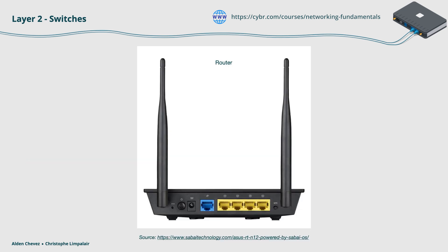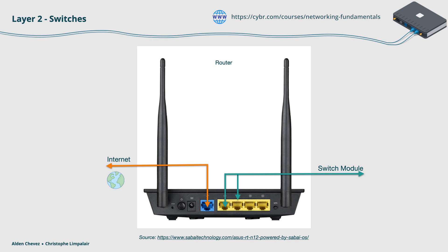So maybe you have one of these routers in your house — the blue port is typically labeled internet, and the yellow ports are a small switch module directly integrated in the router. As you can see, the router part has one port, that blue port, and then the switch part has more ports, the yellow ports.